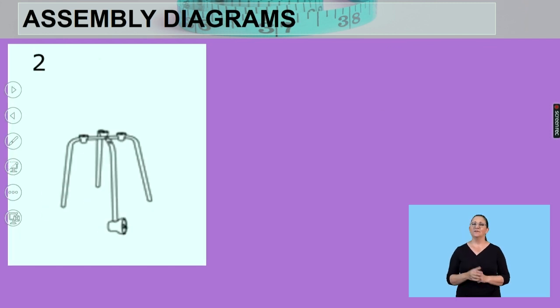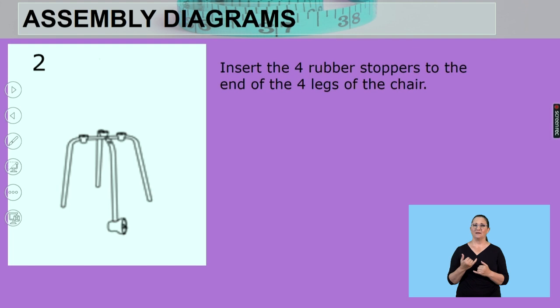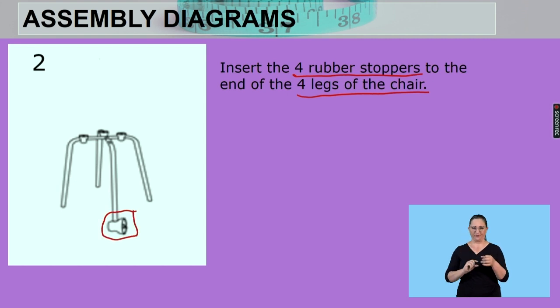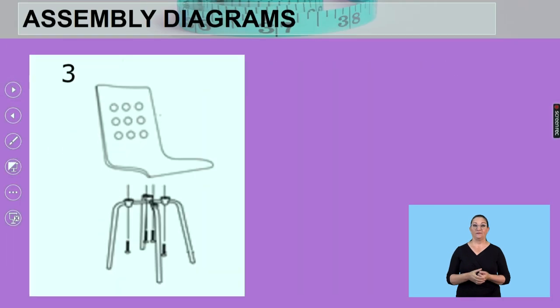The next one. Step two. What are we doing here? Insert the four rubber stoppers to the end of the four legs of the chair. So looking at the diagram, do you see these little stoppers here? They go at the bottom of your chair. That's why you've got to be clear with your instructions when answering this. Look at the picture. See what's happening in the picture. Write down your answer.